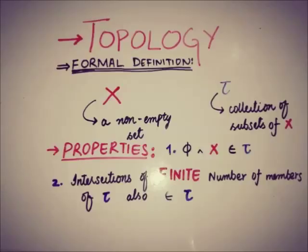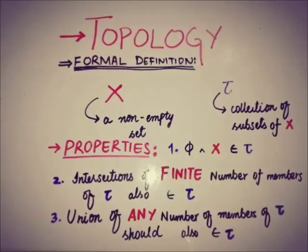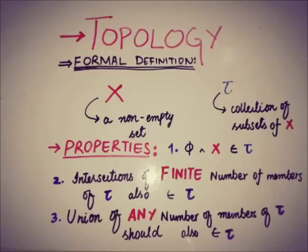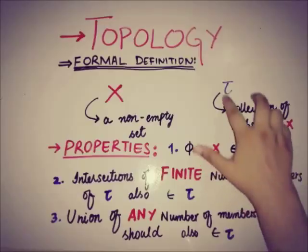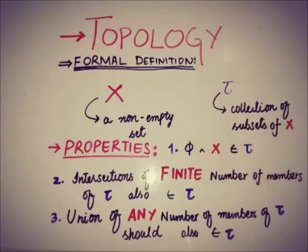The third property is that the union of any number of members of tau should also belong to tau. The union gives us a free hand to pick any number of members — finite or infinitely many — from tau, and the union must also be a member of tau.